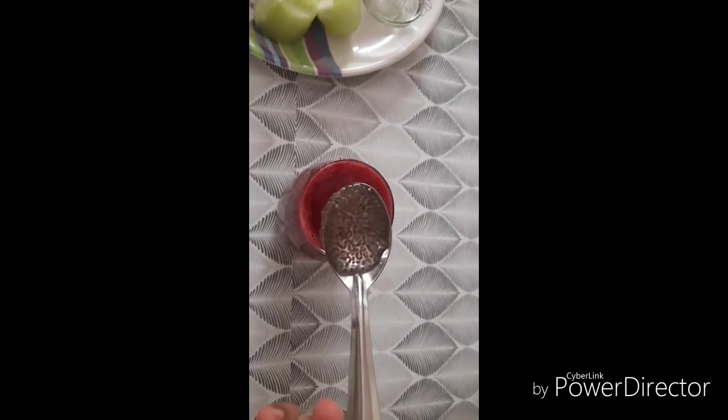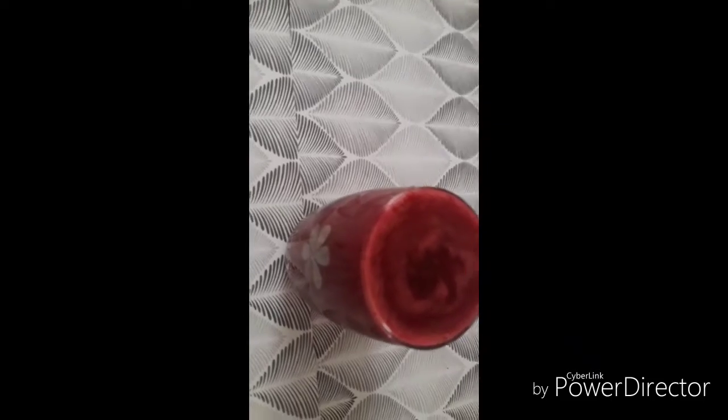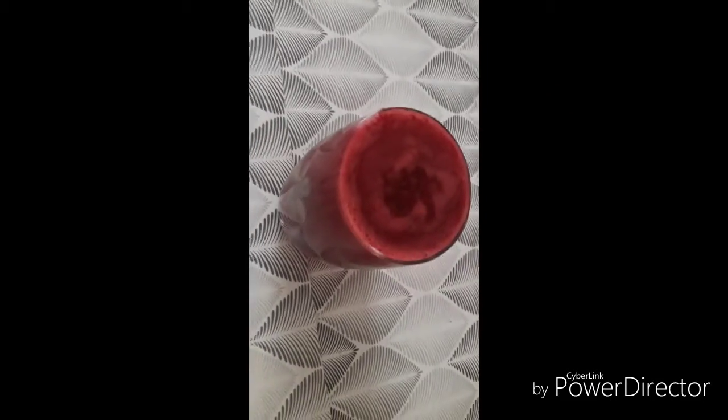I am going to add 2 to 4 spoons. Now, let's mix it well. Healthy beetroot carrot mixed vegetable juice is ready.